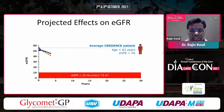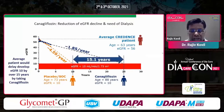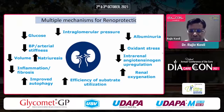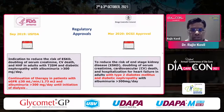Looking at projected effects on eGFR, for a typical CREDENCE patient aged 63 years with eGFR 56, intervening with canagliflozin can prevent the primary event and eGFR decline, delaying the need for dialysis by at least 15 years — a 15-year dialysis-free life gain. Multiple mechanisms of renal protection include reduction in intraglomerular pressure, reduction of BP and arterial stiffness, increased natriuresis, reduced inflammation, reduced albuminuria, and increased renal oxygenation. The US FDA approved it to reduce the risk of end-stage kidney disease, doubling of creatinine, CV death, and HHF in adults with type 2 diabetes and diabetic nephropathy with albuminuria more than 300.